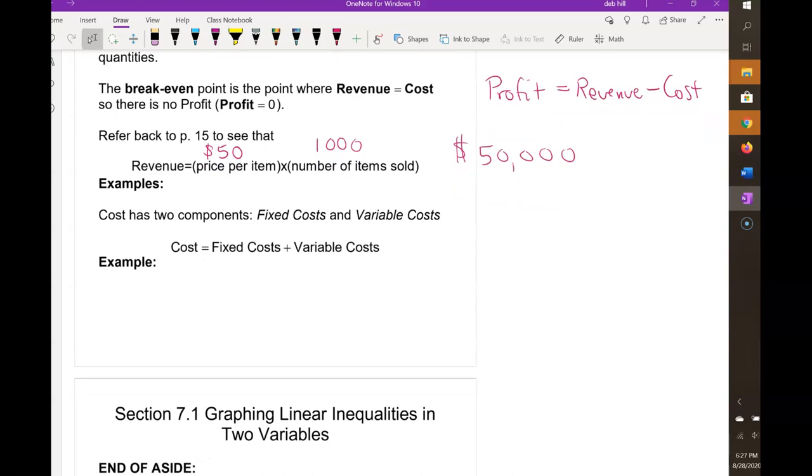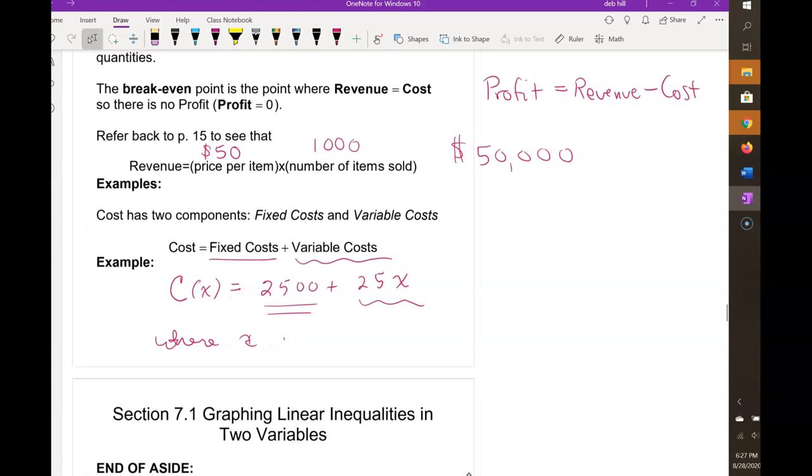Cost has two components: fixed costs and variable costs. Fixed costs are those costs which don't depend on your production level. Fixed costs would be things like your rent and your utilities and your insurance. It doesn't really matter how many widgets you're making, those costs are fixed. Your variable costs are the ones that depend on how many you're making. Your materials costs and your labor costs and your transportation costs are usually variable costs. A cost function usually would look something like 2,500 plus 25x. The fixed costs are the parts that don't depend on x, and the variable costs are the part that does depend on x, where x is production level.